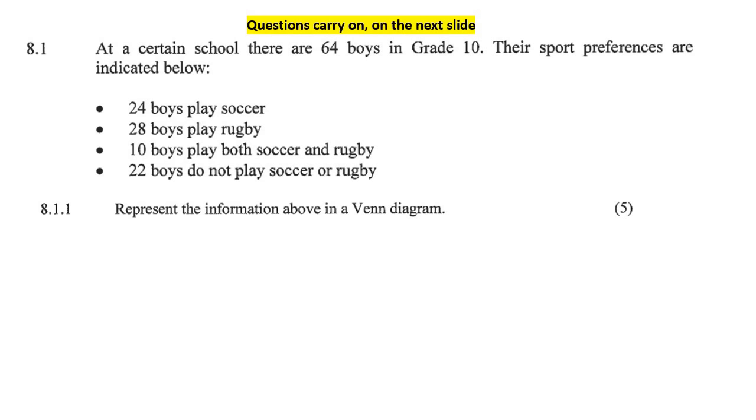Now, for those of you that really struggle with Venn diagrams, I know the feeling. Back in grade 10, I was the type of student, I promise you, I would have to ask my friends, I'd be like, guys, are you all stupid or something? There are 64 boys, right? Now, how can 24 play soccer, 28 play rugby, 10 play soccer and rugby, and 22 do that? If you add up those numbers, it's more than 64. So if that is you, I want to give you a big thumbs up. I know the feeling. I've been there.